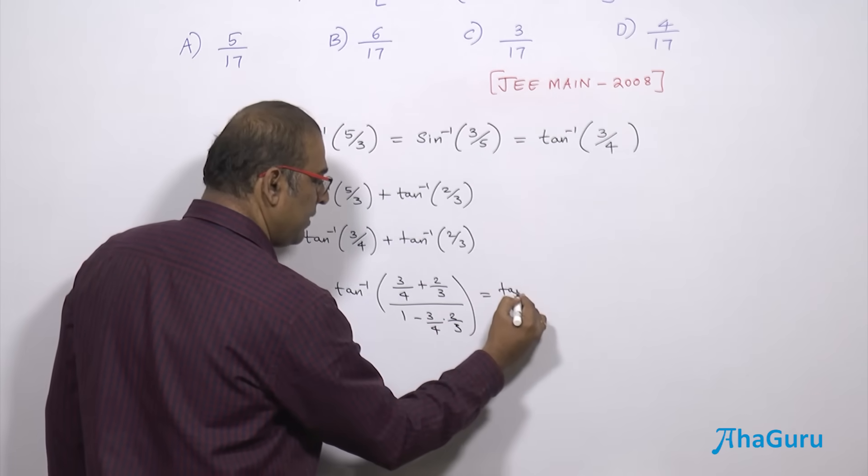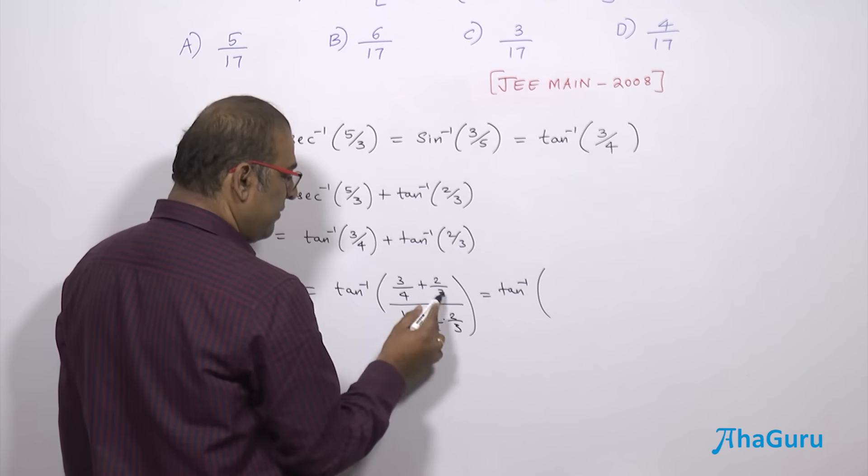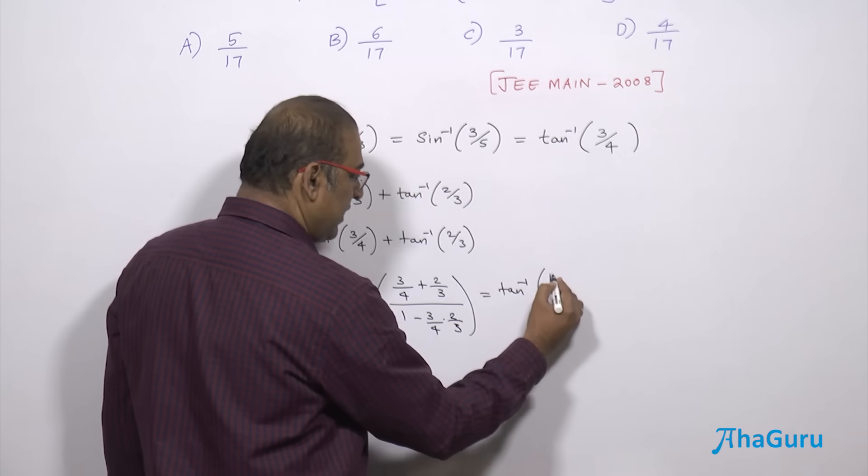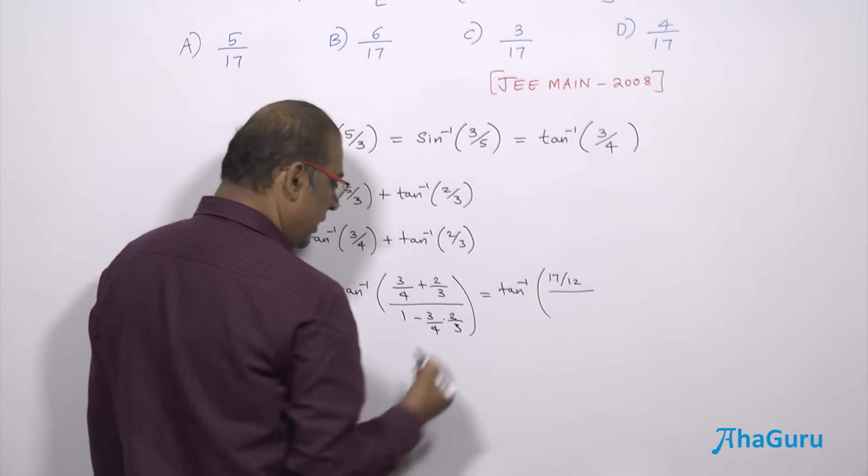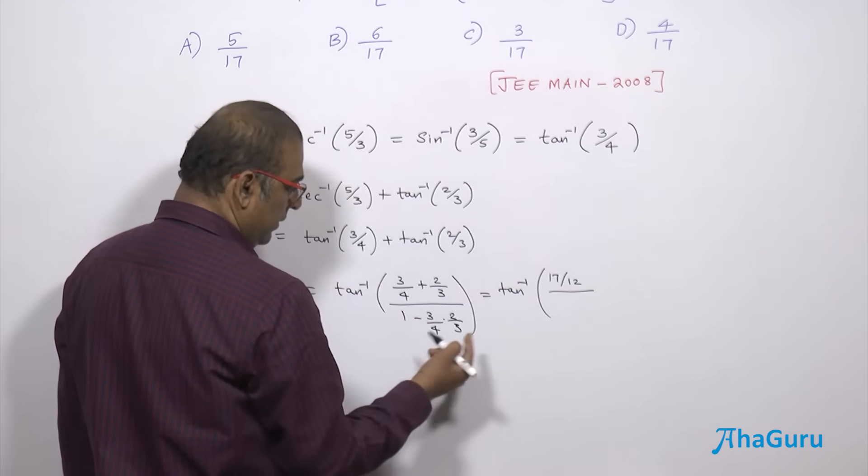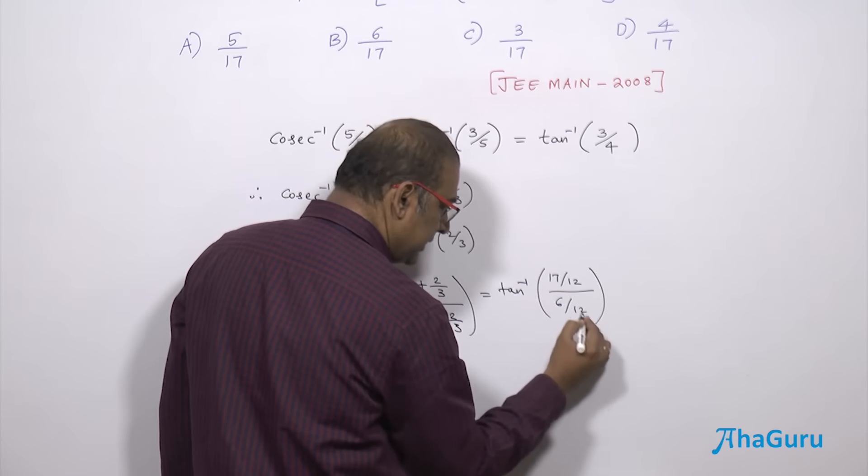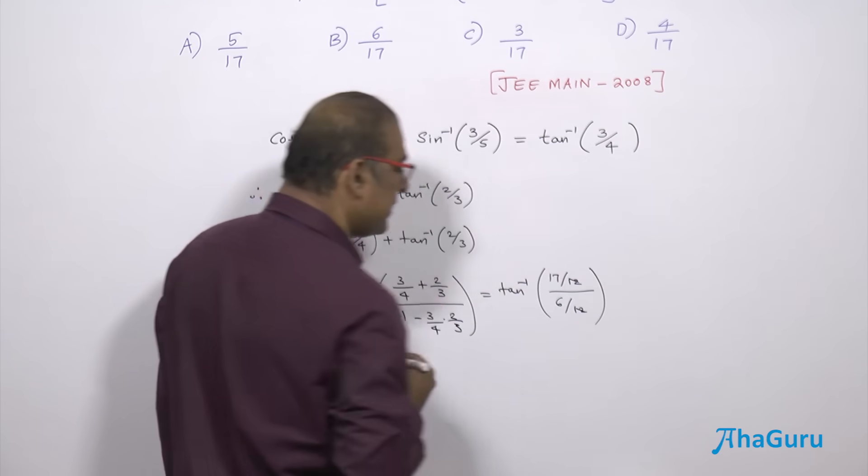So we can simplify now, which is tan inverse of—in the numerator we have 9 plus 8, 17 by 12. The denominator is going to be 6 by 12. So 12 minus 6, we need not even simplify so that the 12 gets cancelled. So we get tan inverse of 17 by 6.